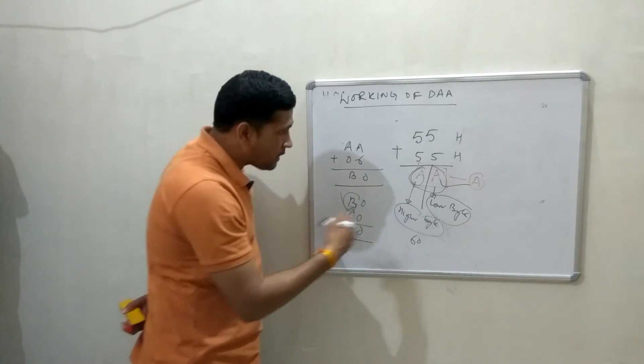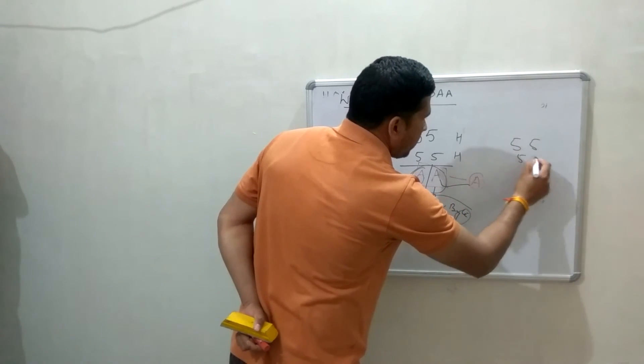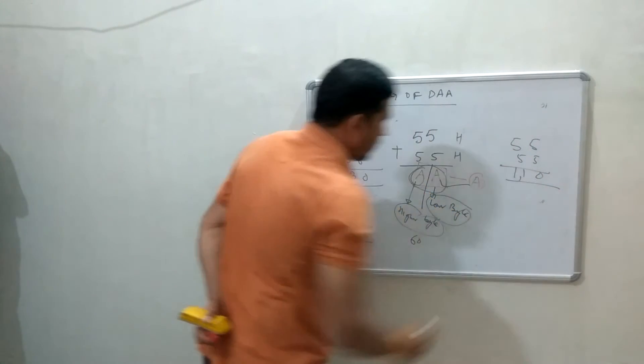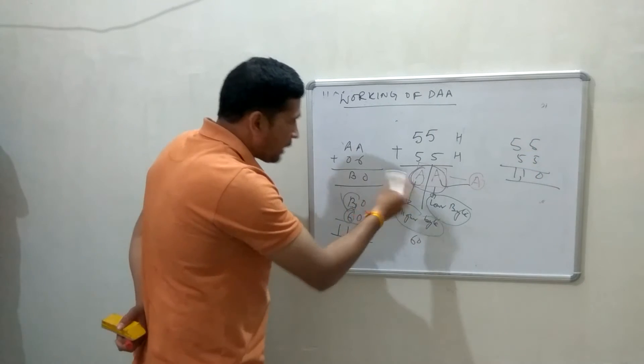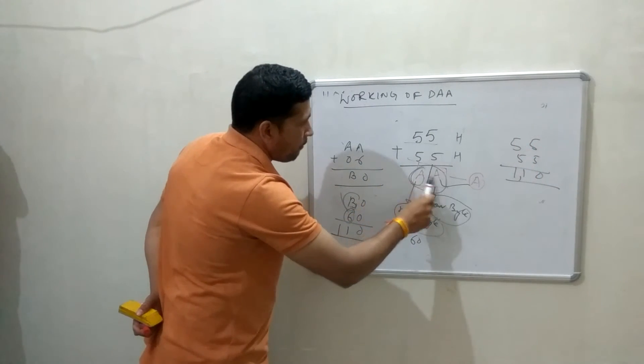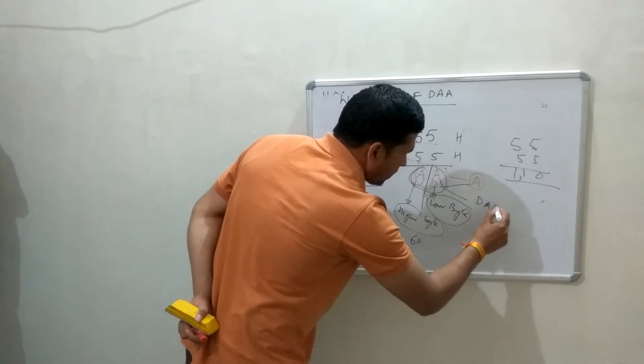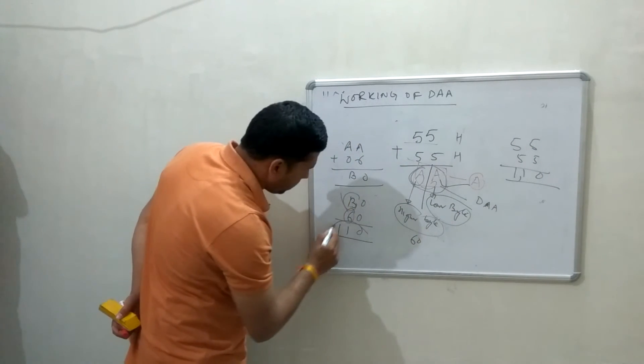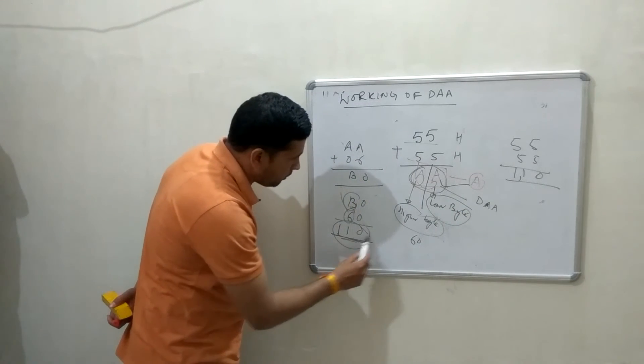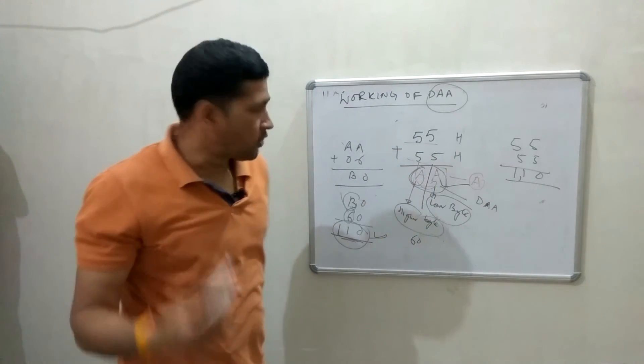So, basically, you can say that, in decimal addition, 55+55, 110. Same as, by using DAA instruction, you can see that, if 55+55, if we implement DAA instruction after this, our output will be like this. Means, this will be final output. So, basically, this is working of DAA instruction.